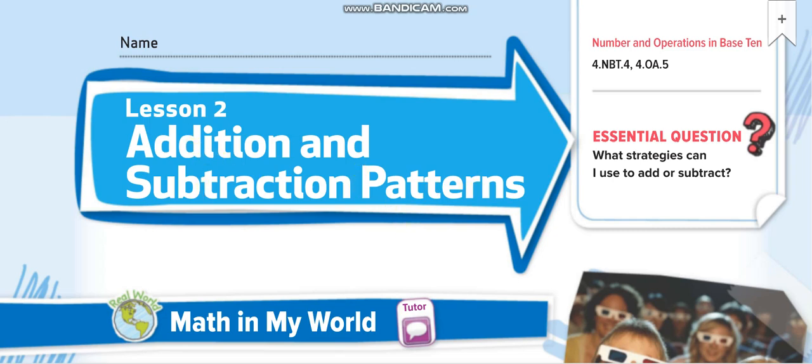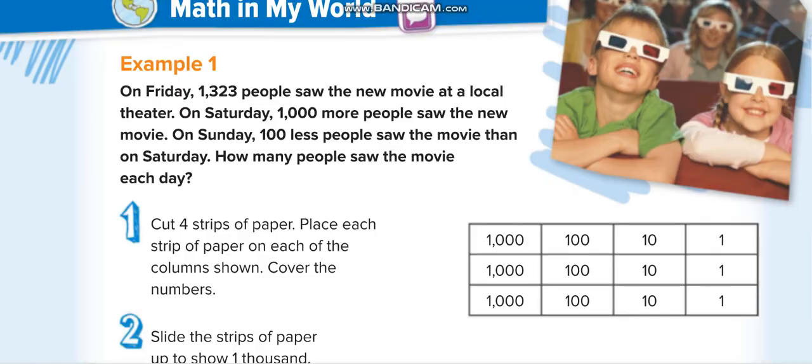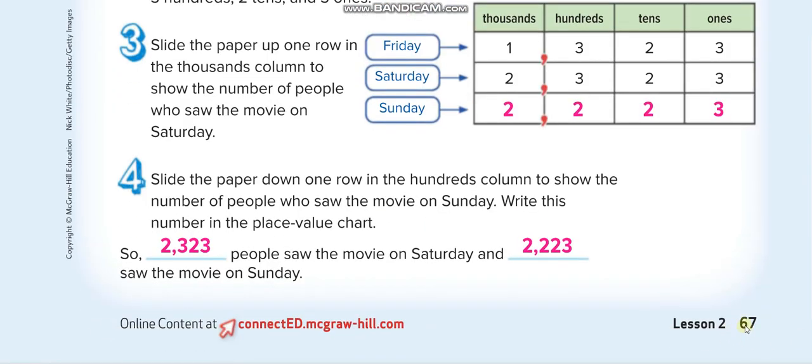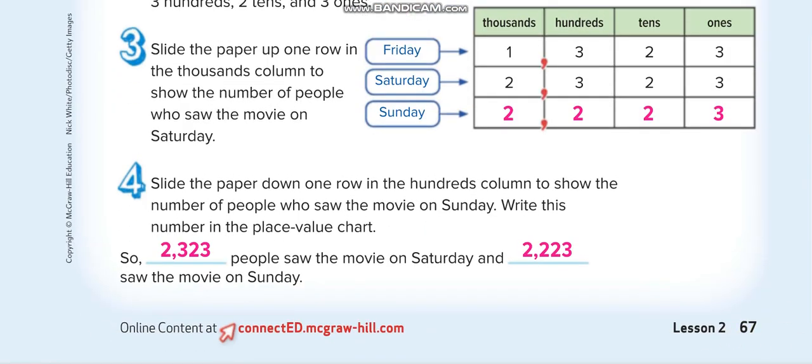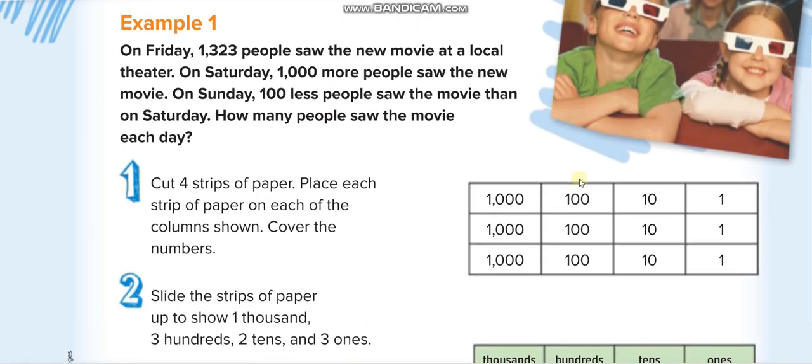Okay, so the page number is 67. Look at this first question. On Friday, 1,323 people saw the new movie at a local theater. On Saturday, 1,000 more people saw the new movie.